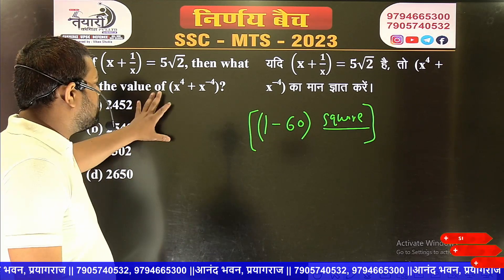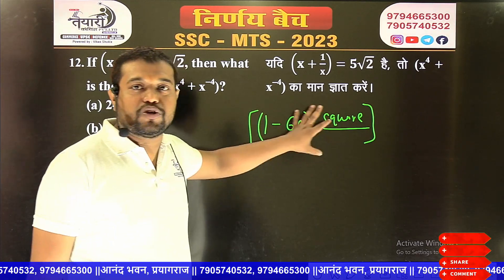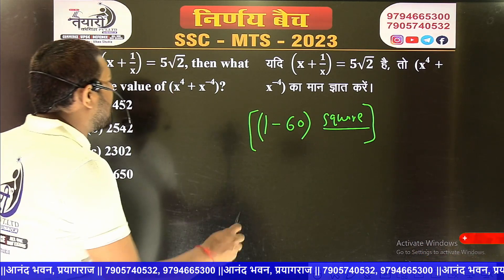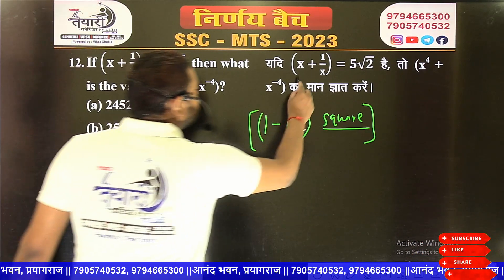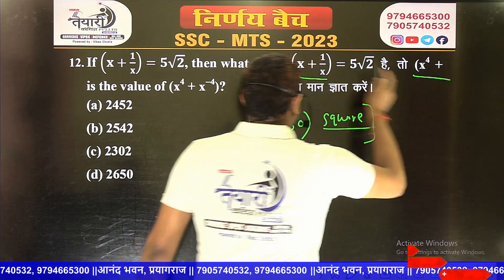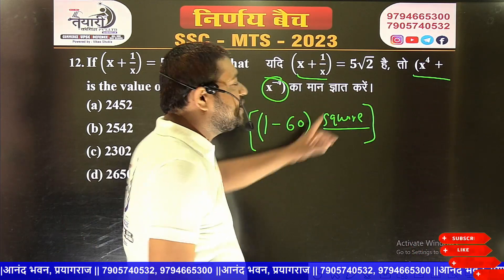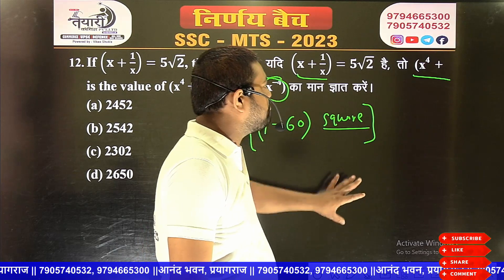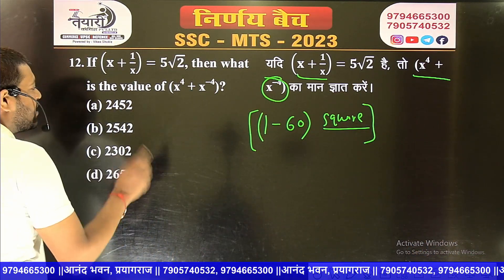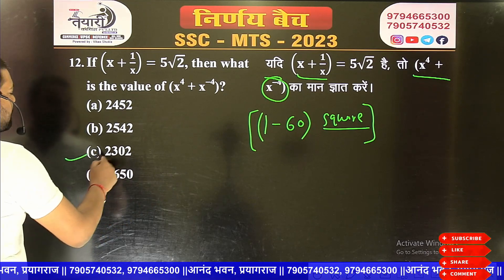If you look at the question on the board — if you remember 1 to 60 — and in your exam you are given x plus 1 upon x, and x power 4 plus 1 upon x power 4, or x power 8 plus 1 upon x power 8, you don't have to do anything. What you have to do is recall the perfect square numbers. If you remember those values, you can get a direct answer.